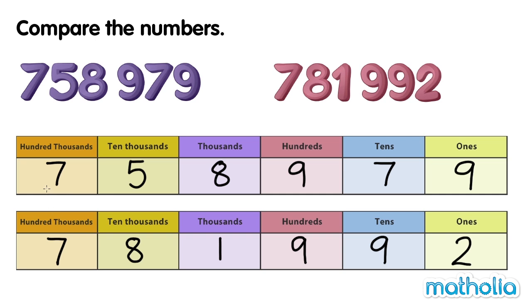Both numbers have 700,000s, so we move on to compare the next highest place. In the ten thousands place, we have 5 and 8. 5 is smaller than 8, so 758,979 is smaller than 781,992. We can also say 781,992 is greater than 758,979.